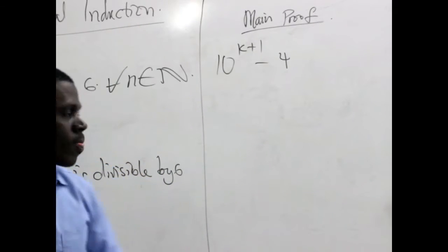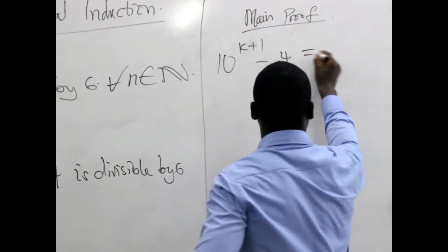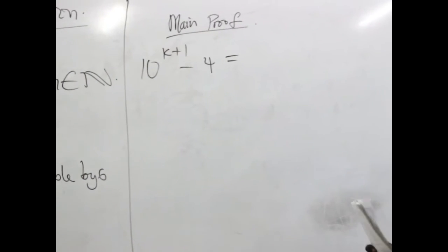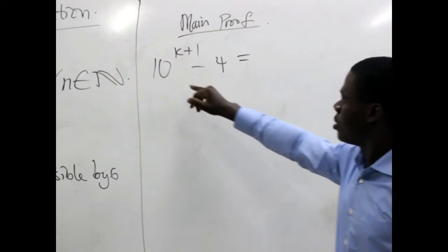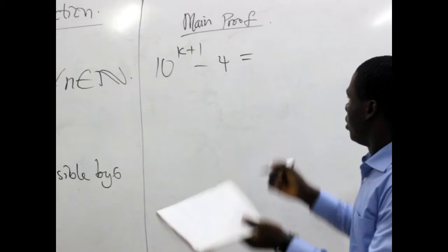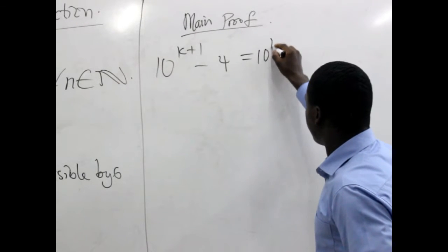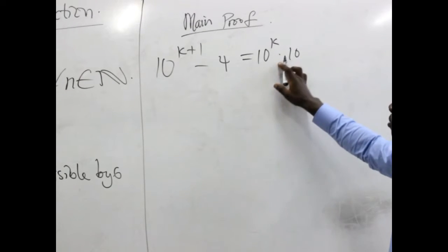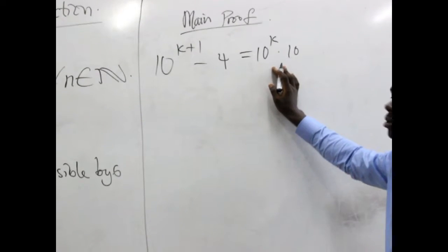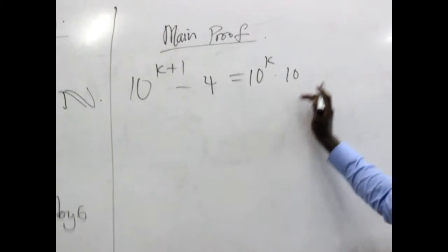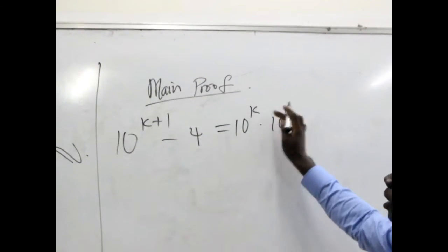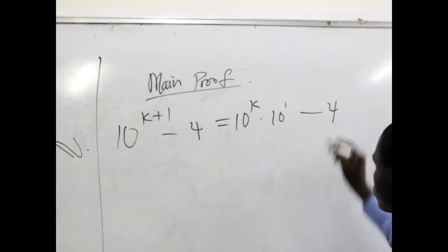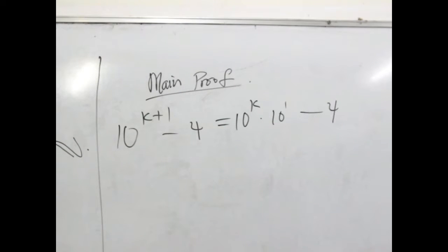Now we will go back to our knowledge of indices. We can look at this as being written as 10 to the power k multiplied by 10, because we recall that when the bases are the same and we are multiplying, then we can add the powers. So this is 10^k times 10 minus 4.